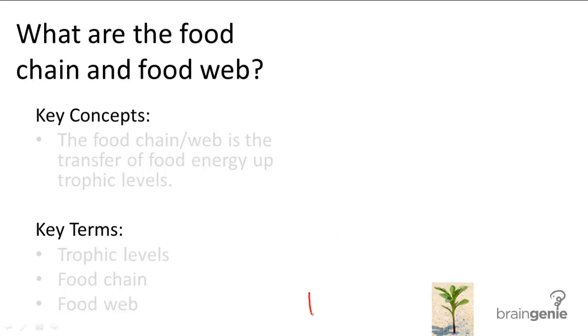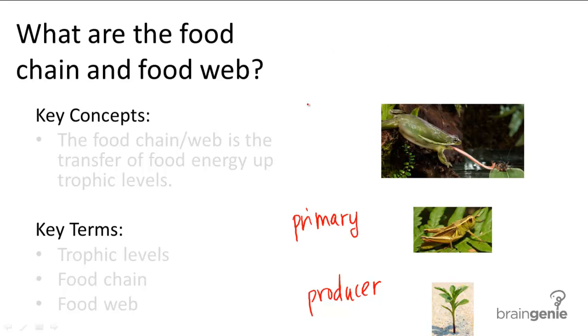Producers are the plants that derive their energy from the sun. Consumers that eat producers are called primary consumers. Consumers that eat primary consumers are called secondary consumers.